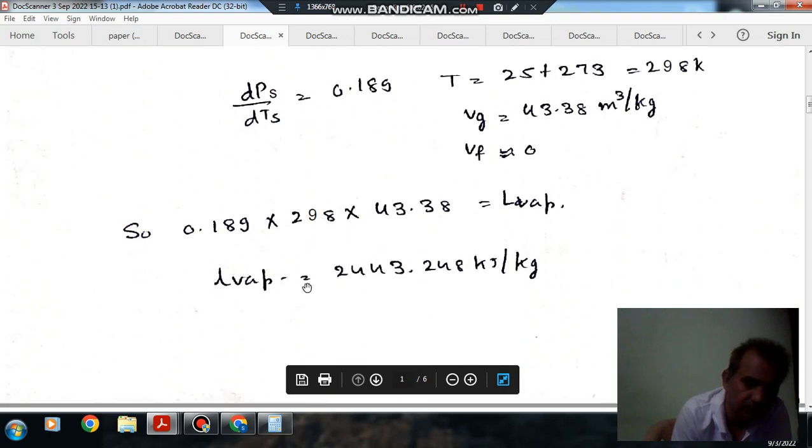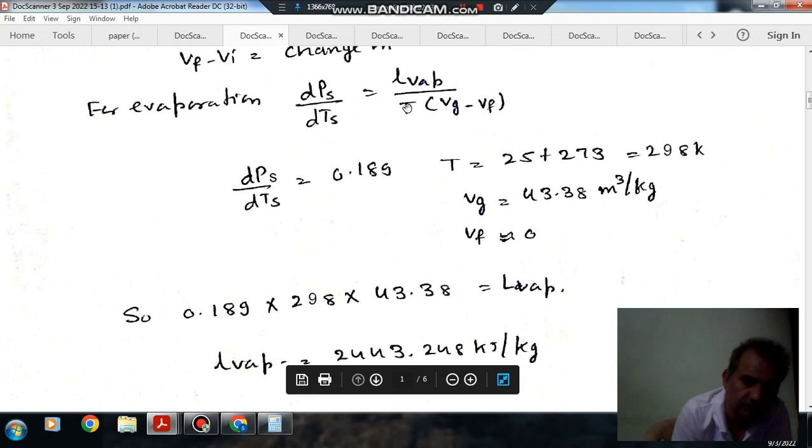...equals L_vaporization, so L_vaporization is 2443.248 kJ/kg. So the answer is D. Just putting the values here you can find out L_vaporization.